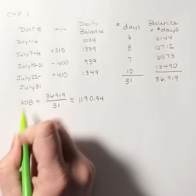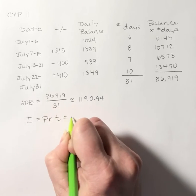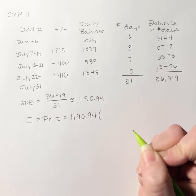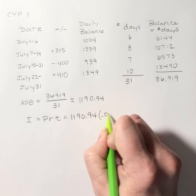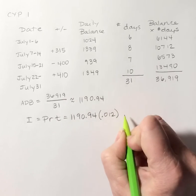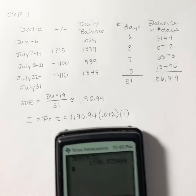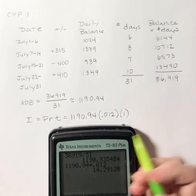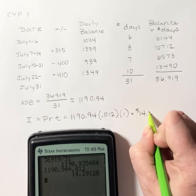Then to find my interest charge, I use principal times rate times time. My interest rate is 1.2% per month, so 0.012, and we are doing it for one month. So my interest charge is $14.29.